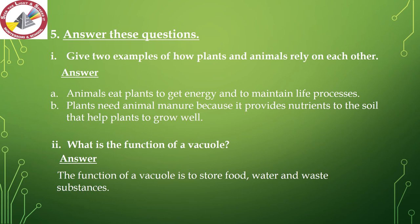Question number 5 — answer these questions. Number 1 — give two examples of how plants and animals rely on each other. Part A: animals eat plants to get energy and to maintain life processes. Part B: plants need animal manure because it provides nutrients to the soil that help plants to grow well. Number 2 — what is the function of a vacuole? The function of a vacuole is to store food, water and waste substances.